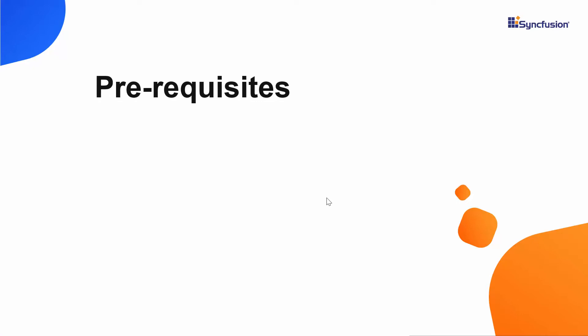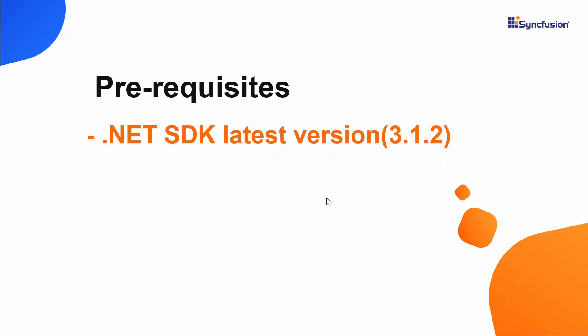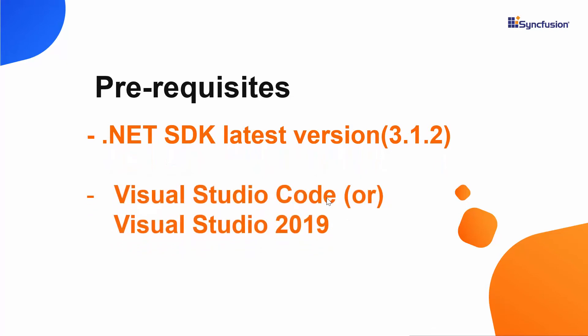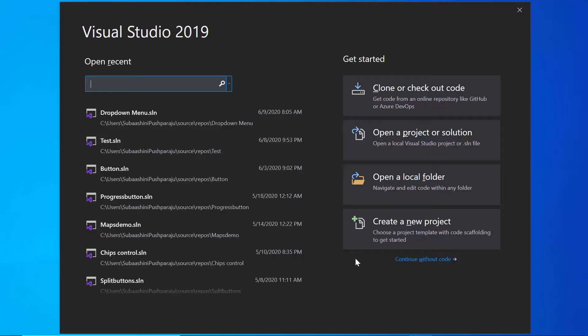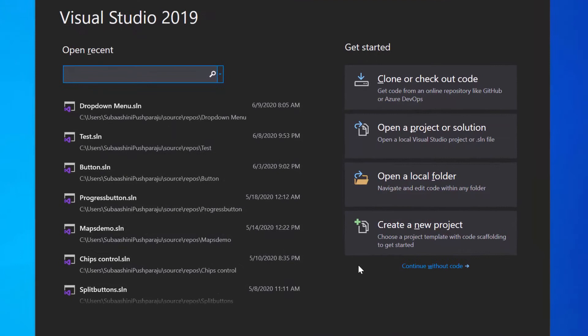Before I start to create a Blazor application, I need to make sure whether the .NET Core SDK latest version is installed on my machine, and I should have Visual Studio Code or Visual Studio 2019. In this tutorial, I'm going to create a new server side Blazor app, so let me open Visual Studio 2019 first.